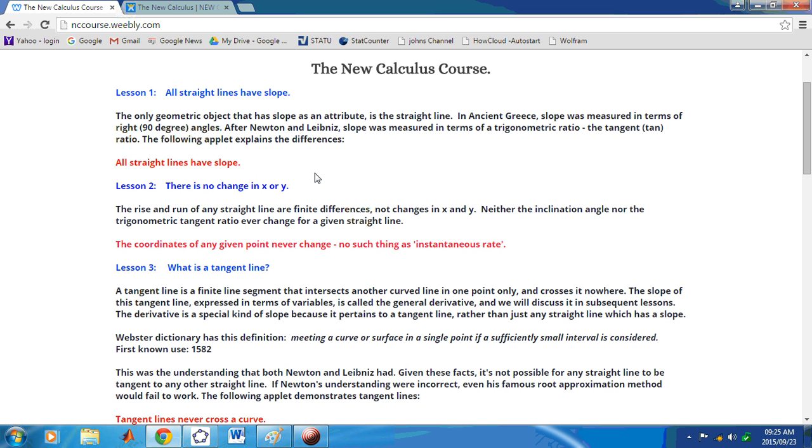The derivative is the slope of a straight line, but it's a special kind of straight line, one that is tangent to a non-linear curve. After all, a straight line cannot be tangent to itself. There is no way a straight line can intersect another straight line in one point and be tangent to it. So, the original definition of tangent line has been misconstrued and misunderstood by academics in the last few hundred years.